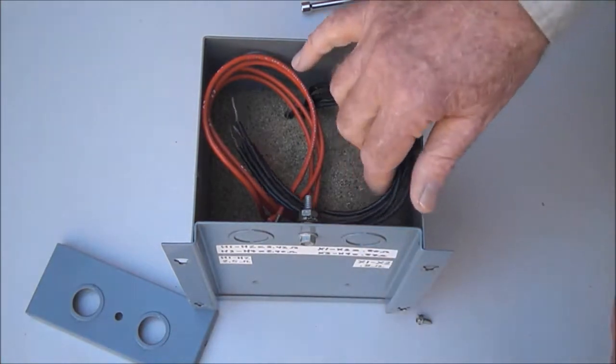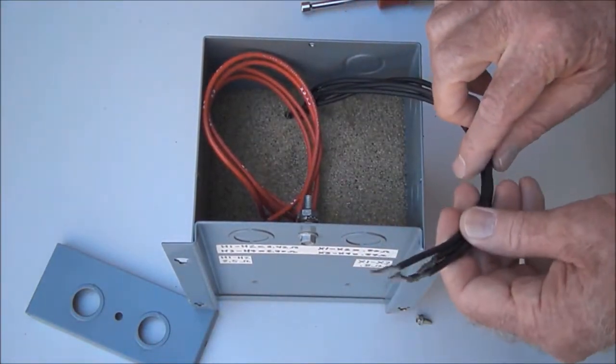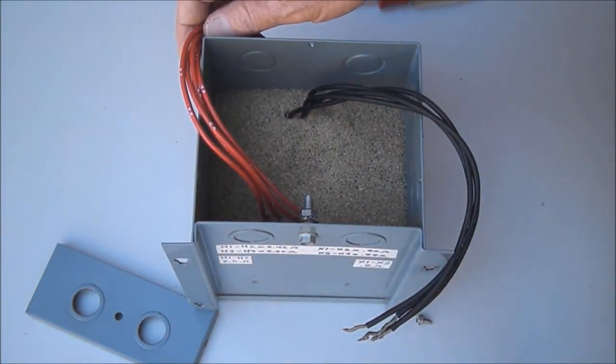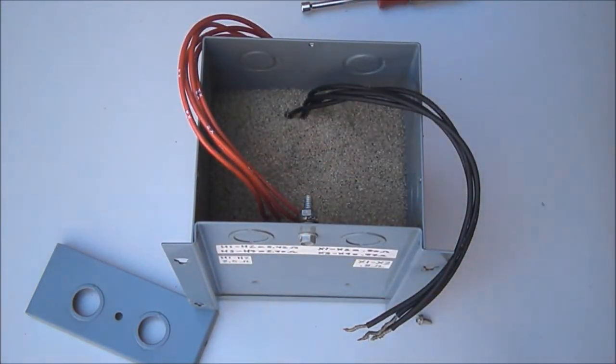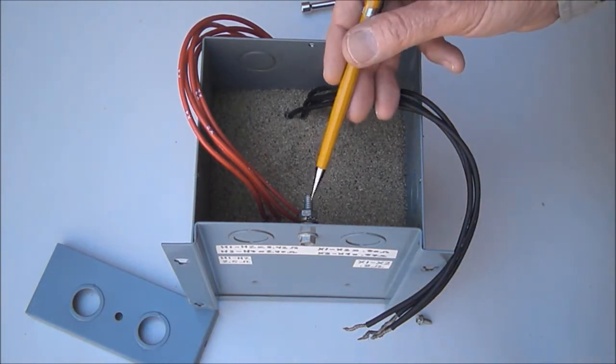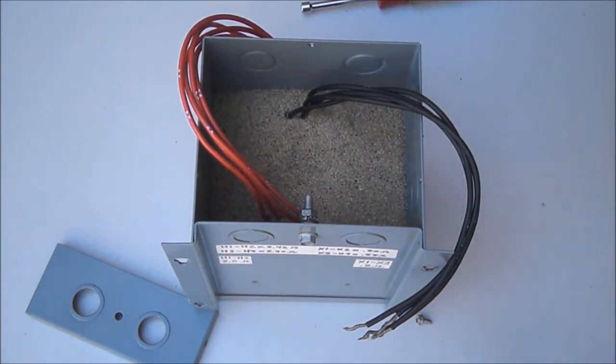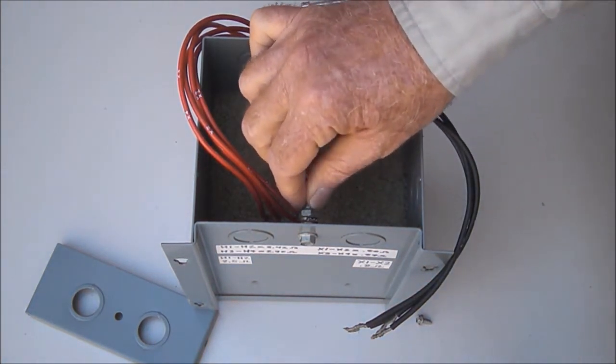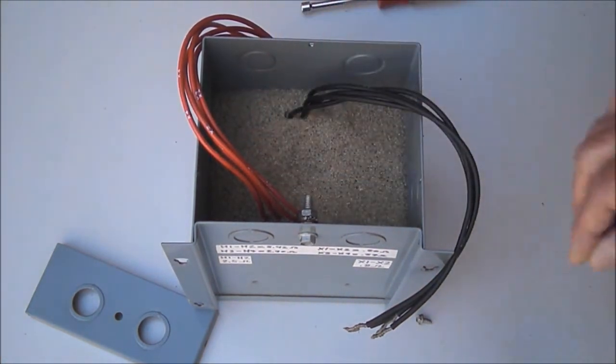Inside we see primary wires that are black and secondary wires that are red on this particular type of transformer, including a quarter twenty bolt for grounding which would be connected to the grounding electrode or grounding wire of the system it's connected into.